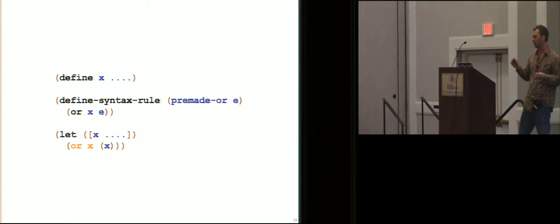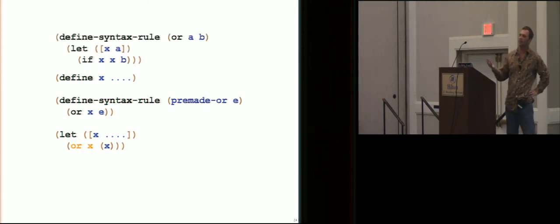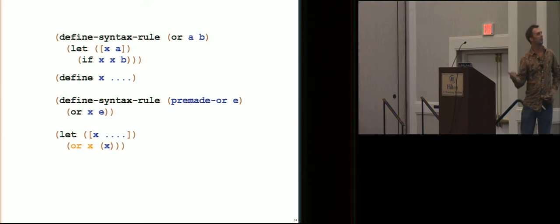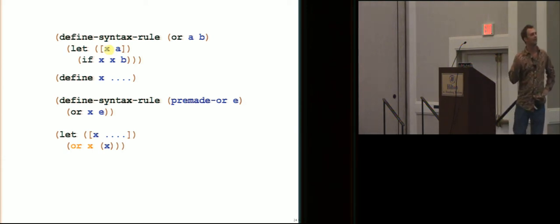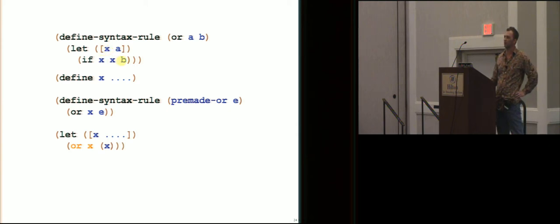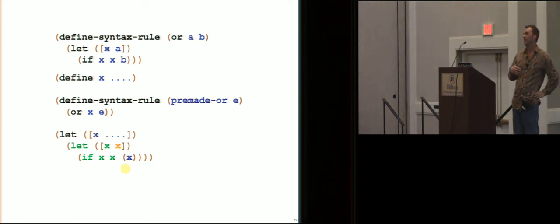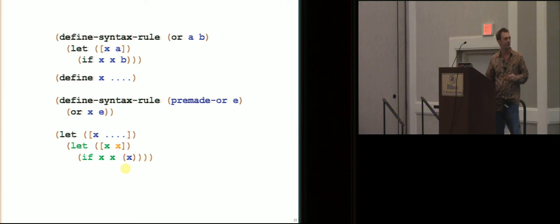The problem gets a little bit worse. If you recall that or is the classic example of a scheme macro that introduces a temporary binding. Here my temporary binding is called x. X is the value of a, so that we evaluate a only once. If that's a true value, we return it, otherwise we return b. So we expand the or macro, and now we get this pattern of let's, and x is everywhere, and we've got green x's and orange x's, and there's just not enough information here to resolve the binding.